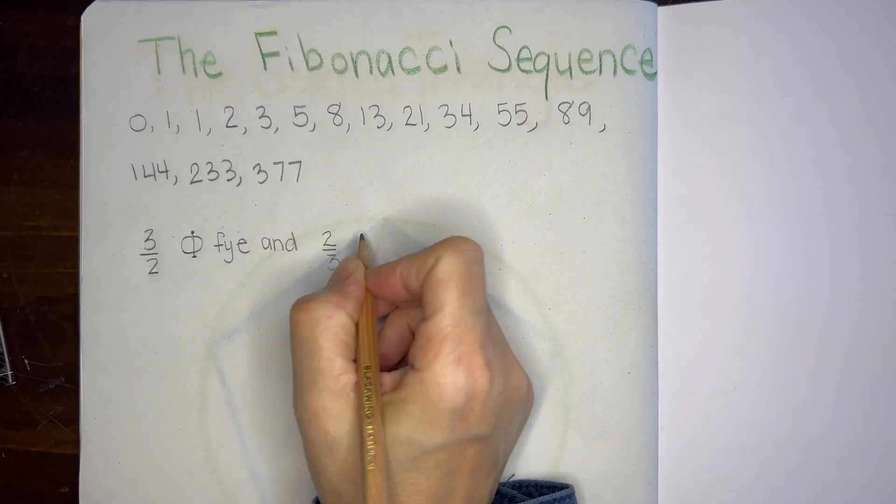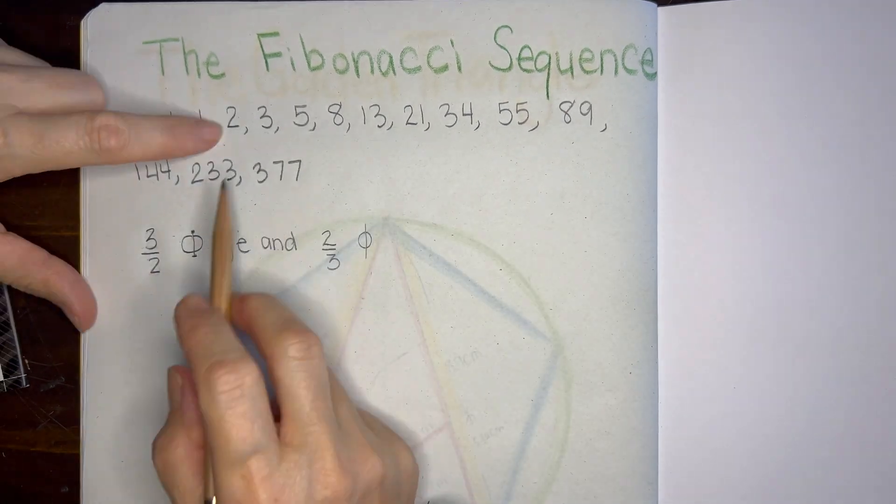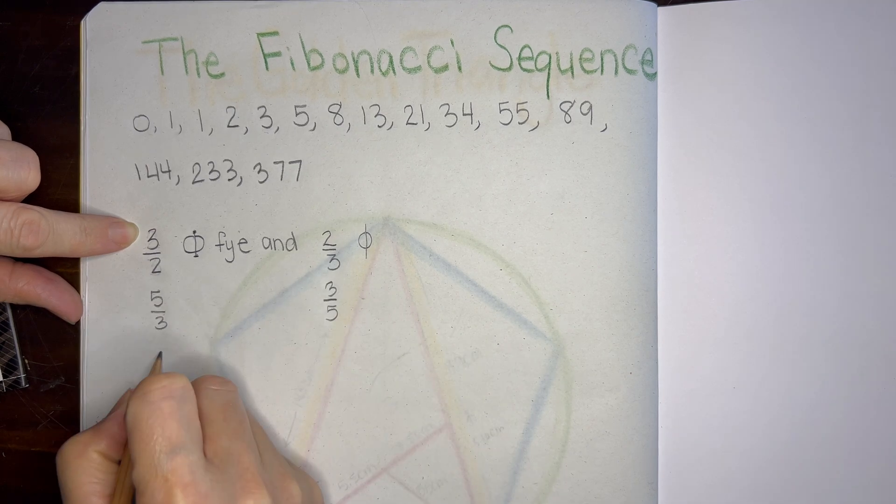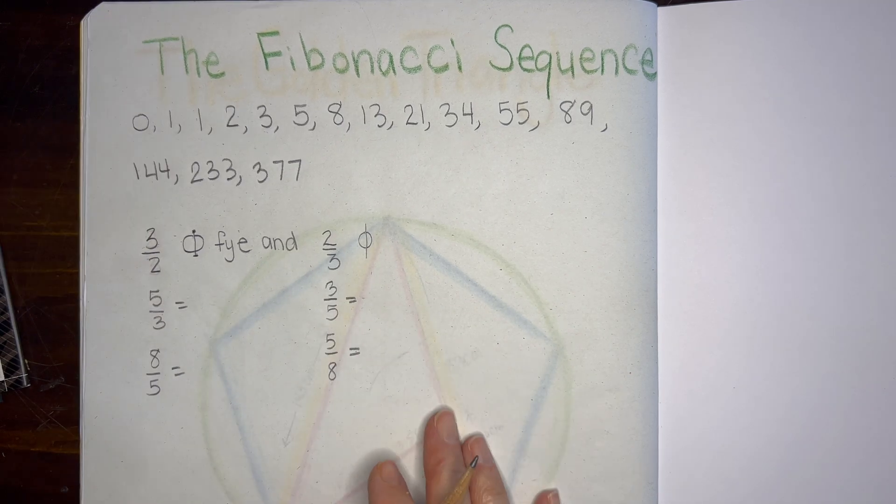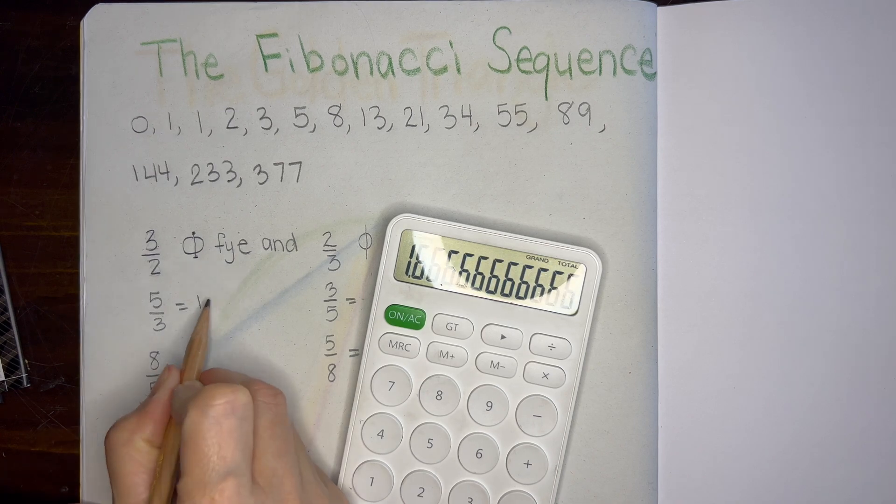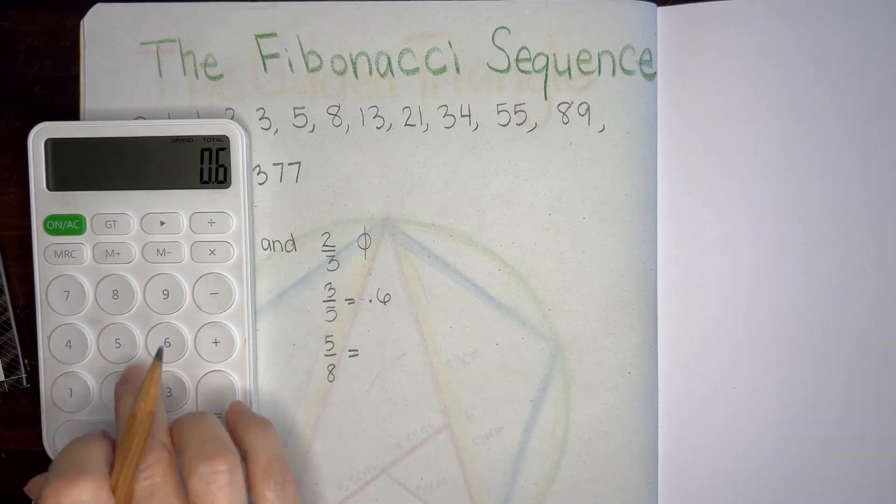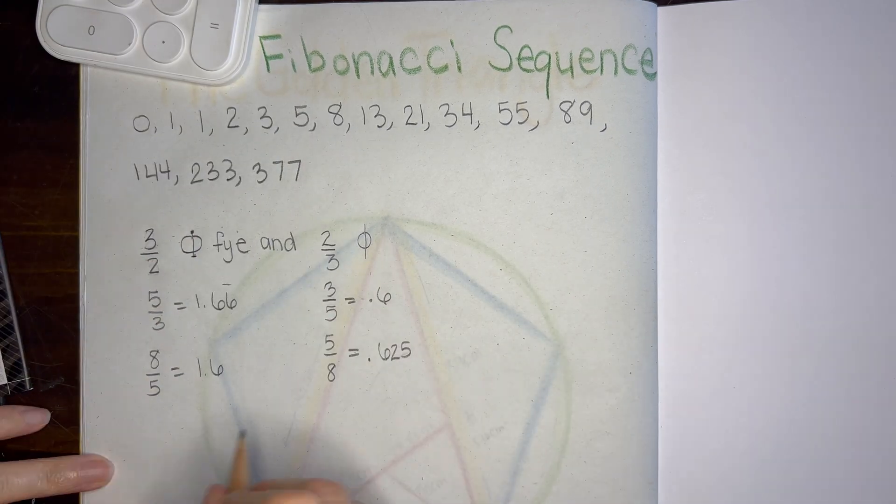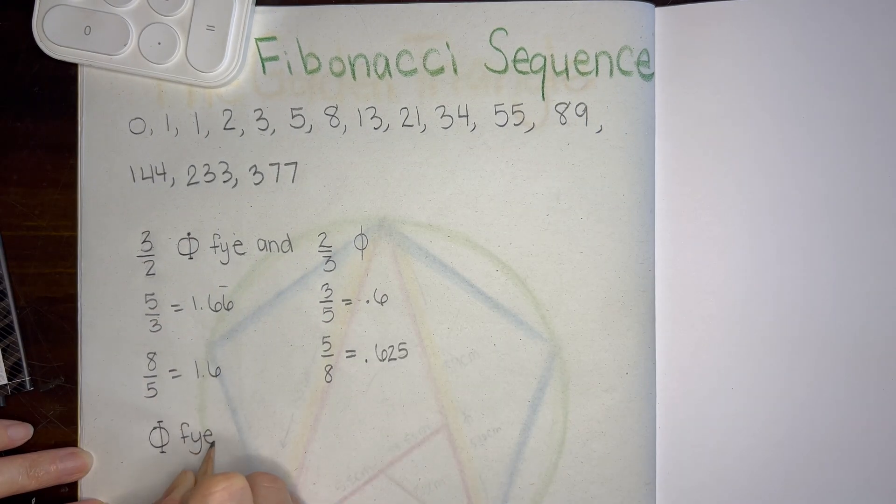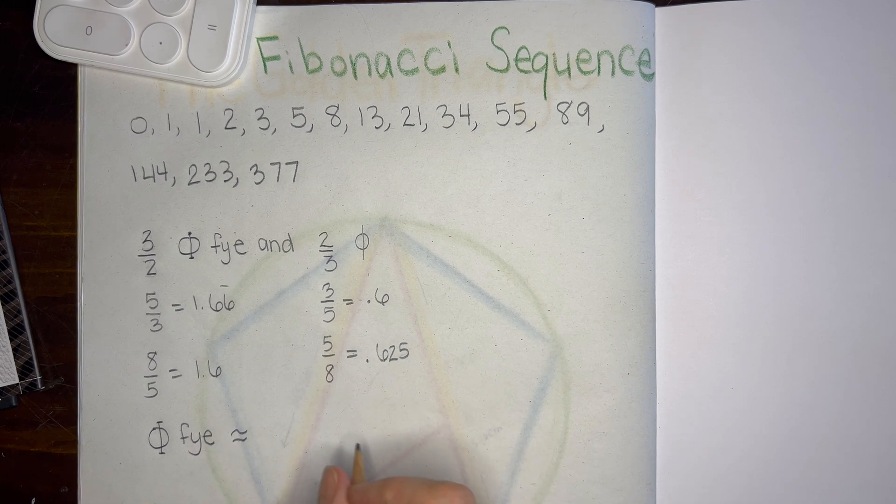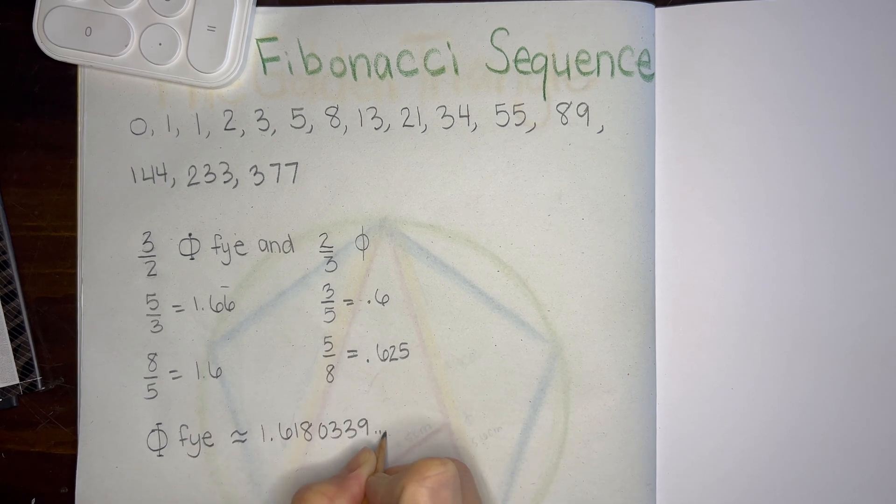So the way we're going to do this is we're going to take two numbers and show how those two numbers will get you closer and closer to the golden section, the golden ratio, phi and phi. I wrote down phi and phi and I forgot to write down actually phi, but I wrote down the symbol for it. And then we're going to work out the math in order to get closer and closer to the actual constant.